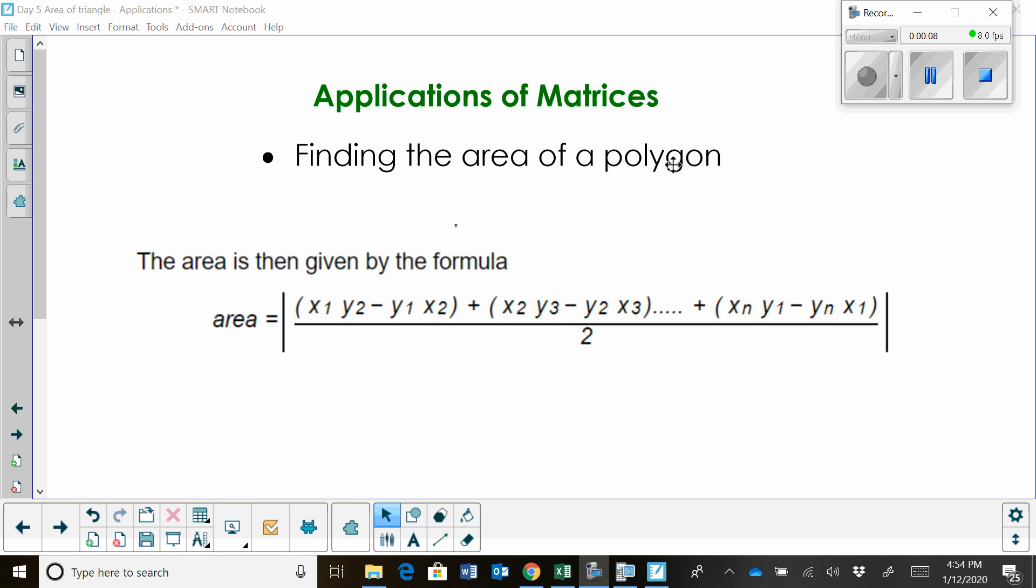We're going to find the area of a polygon and we have a little formula for the area. The area is equal to these little 2x2 determinants all added up, and then we find the absolute value of that and divide by two. So it's a group of 2x2 matrices that we add up and divide by two, so it's really pretty easy.